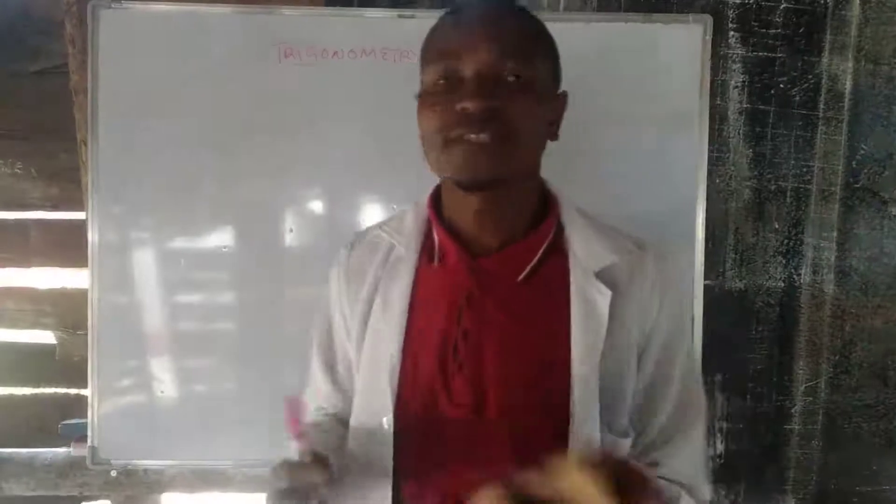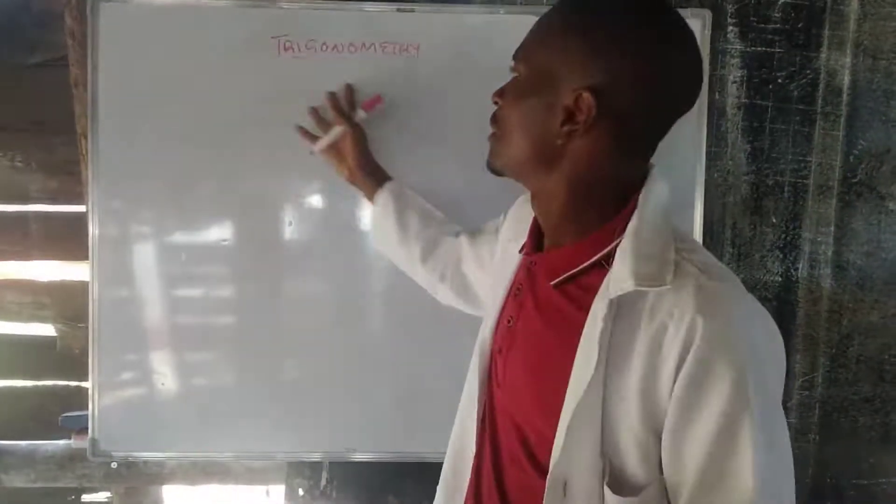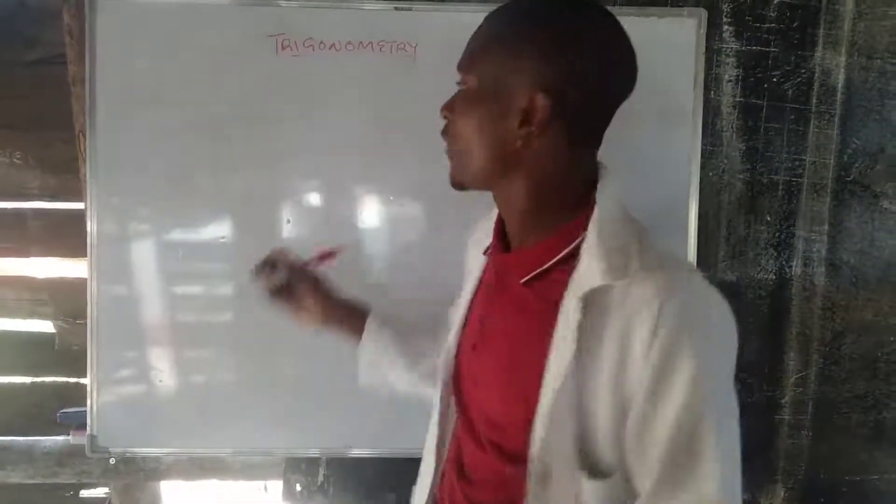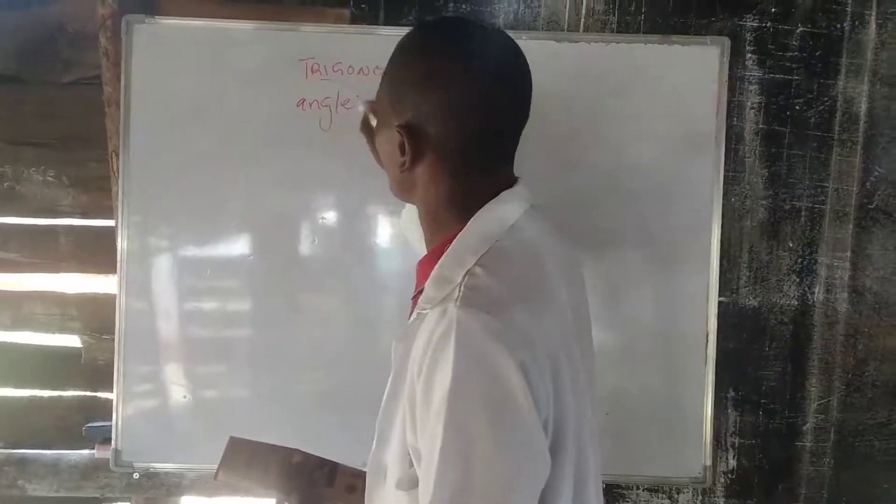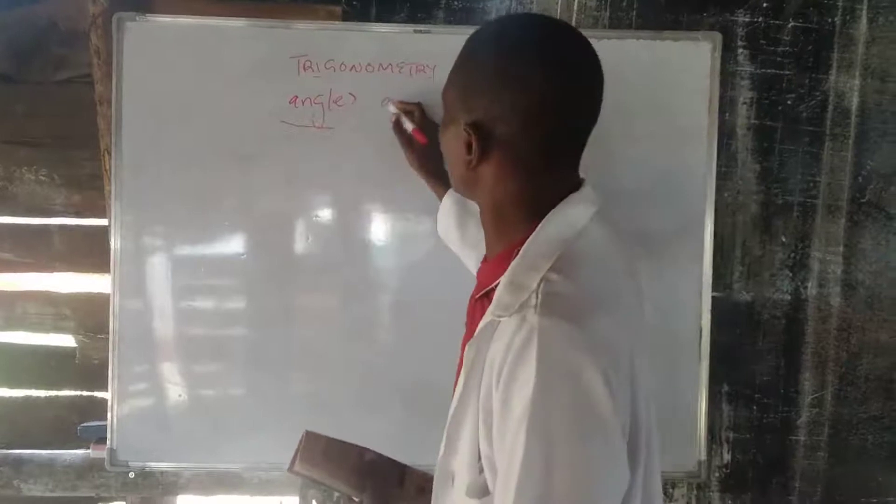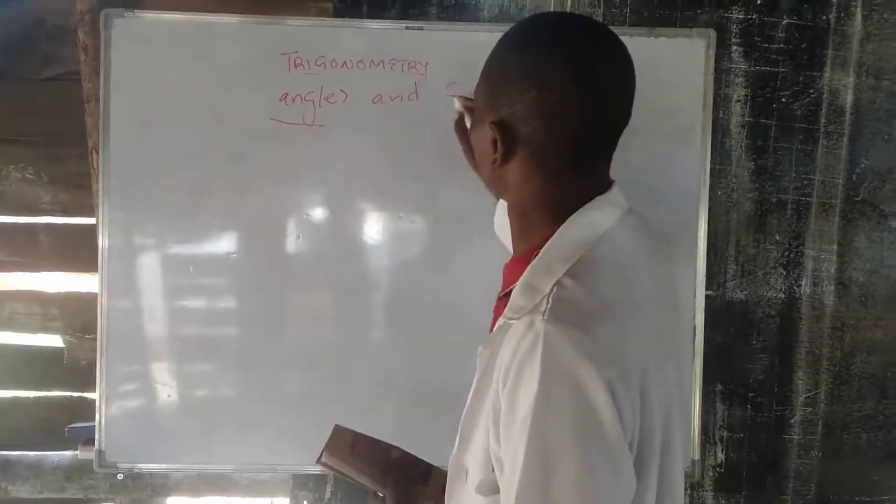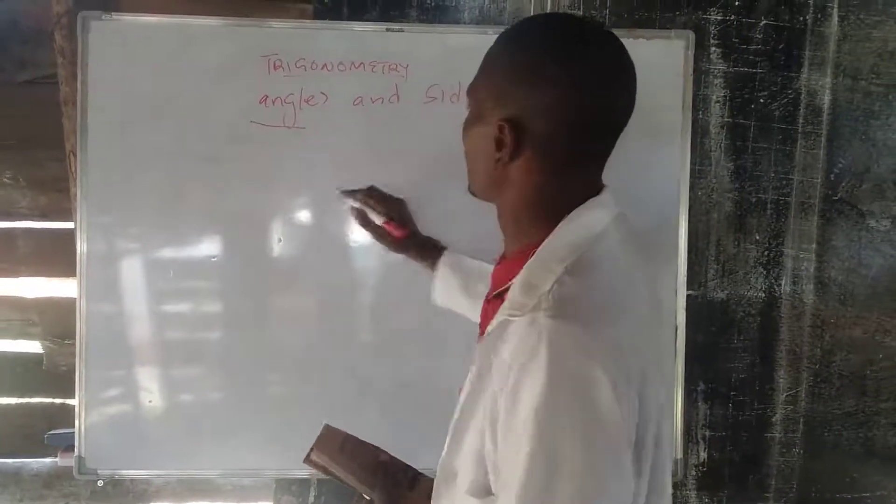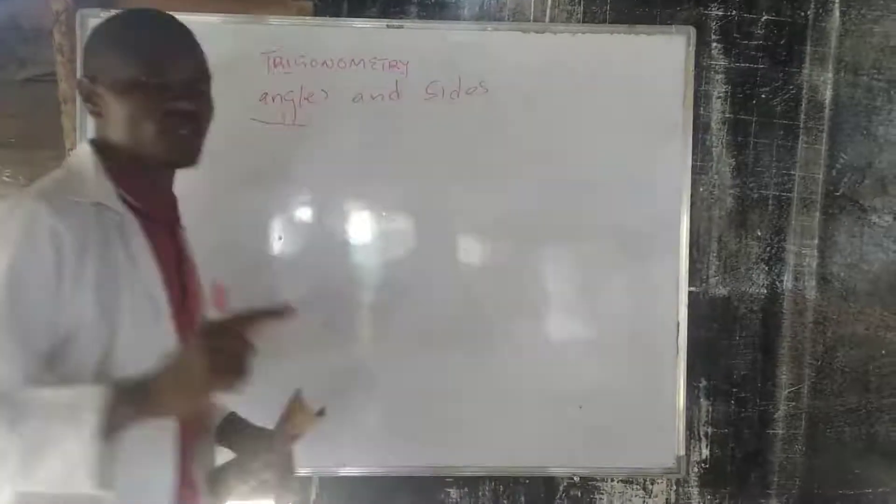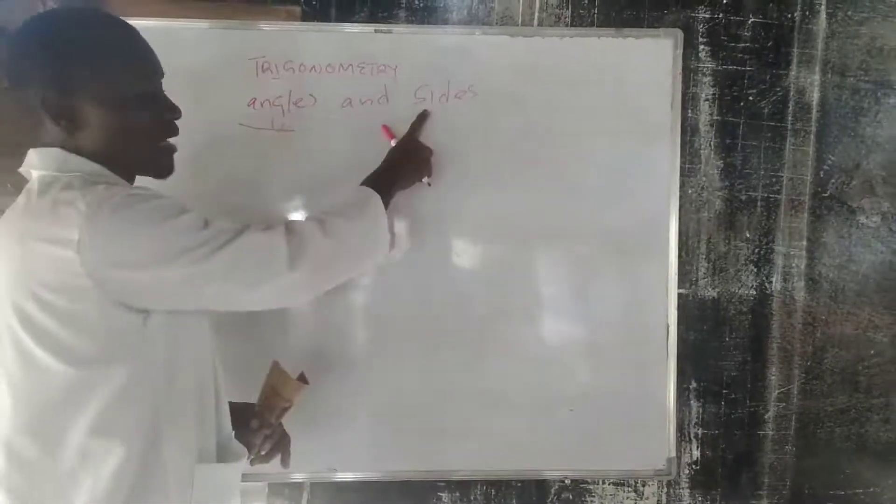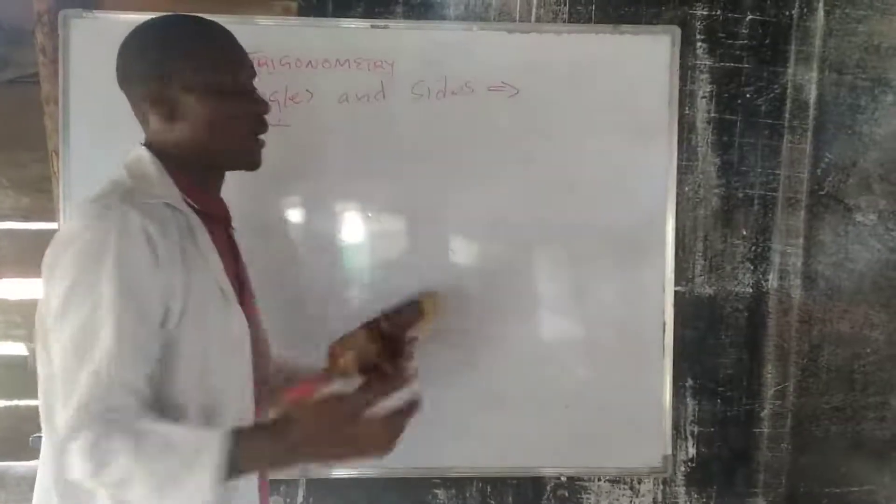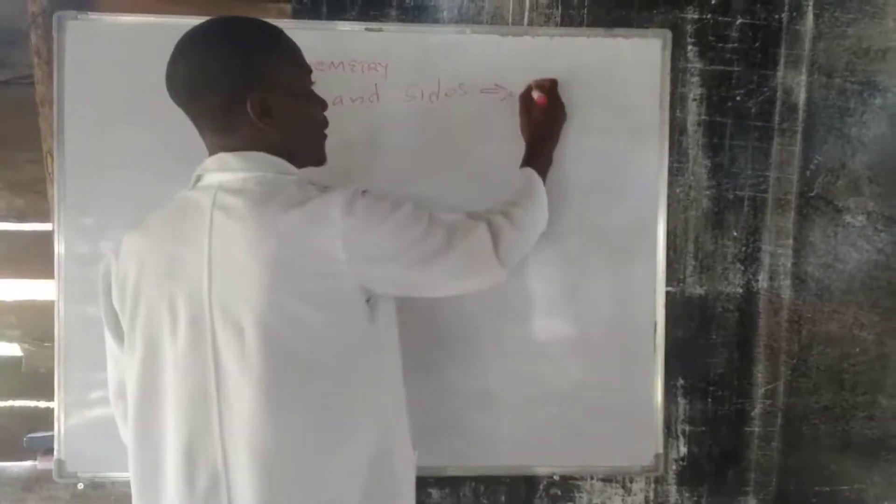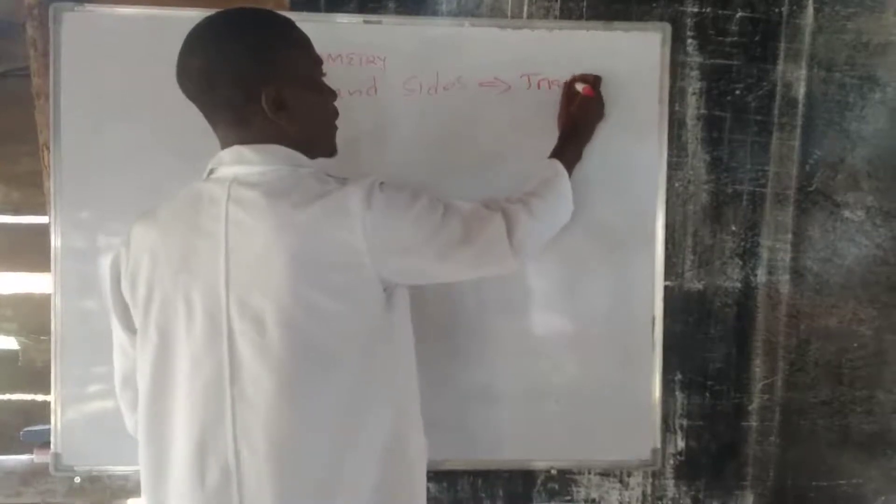So, trigonometry is simply a topic that deals with angles. So, it deals with angles and also sides, which, in total, makes up you are dealing with a triangle.